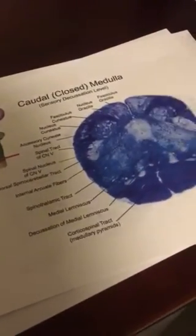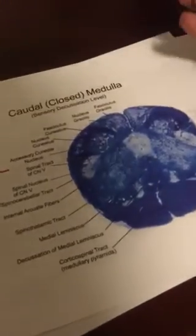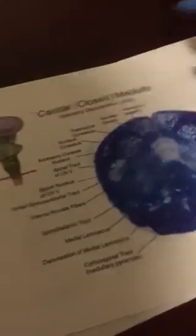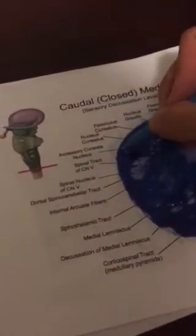When we get into the medulla, we can still see our dorsal spinocerebellar and, it's not labeled but, our ventral spinocerebellar is right here. Then we remember our nucleus gracilis and cuneatus are here, but now we can also note an accessory cuneate nucleus which would be very relevant in this.